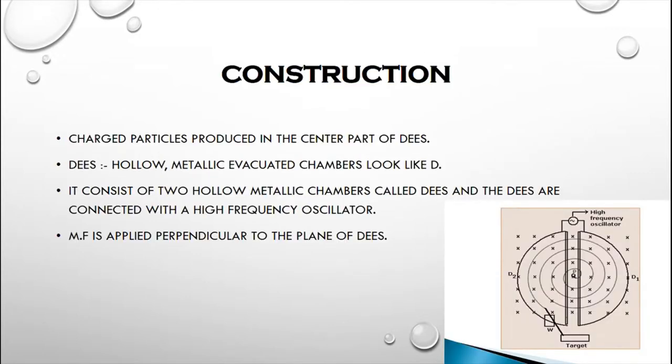Construction: Charged particles are produced in the center part of the D's. As we see in the pictures, the particles are placed in the center of the D's. These D's are basically hollow metallic evacuated chambers that look like D. It consists of two hollow metallic chambers called D's and these D's are connected with a high frequency oscillator. The magnetic field is applied perpendicular to the plane of the D's.